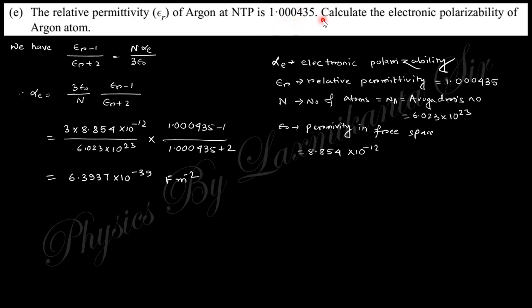Next question: the relative permittivity of an argon at NTP is like that. Calculate the electronic polarizability. The Clausius-Mossotti relation says like that, so electronic polarizability will be like that. Put this value, will be often this type of expression.